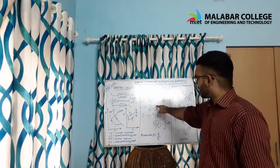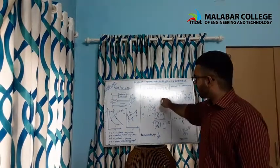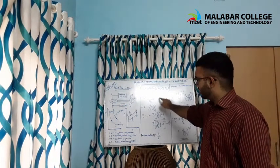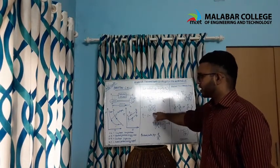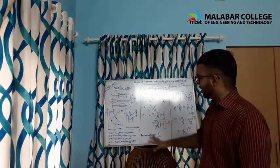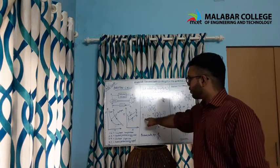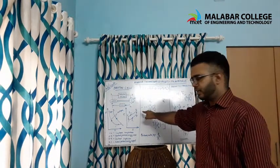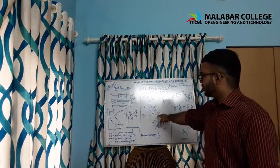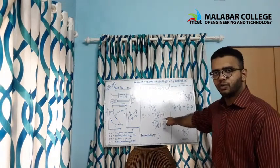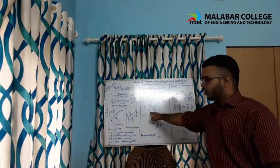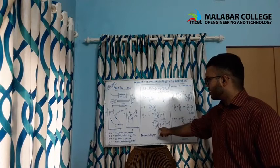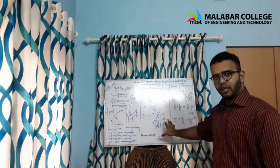This simplifies to η = 1 − Q2/Q1. Substituting Q2 = T4 − T1 and Q1 = T3 − T2, and taking T1 common from the numerator and T2 common from the denominator, we get: η = 1 − [T1(T4/T1 − 1)] / [T2(T3/T2 − 1)]. This is equation (1).